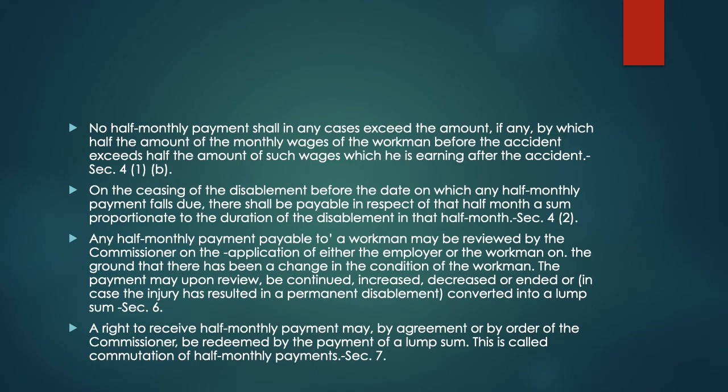No half monthly payment shall in any case exceed the amount, if any, by which half the amount of the monthly wages of the workman before the accident exceeds half the amount of such wages which he is earning after the accident. This is mentioned in Section 4, clause 1, sub-clause (b). On the cessation of disablement before the date on which any half monthly payment falls due, there shall be payable in respect of that half month a sum proportionate to the duration of the disablement in that half month. This is mentioned under Section 4, clause 2.